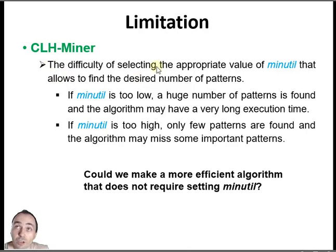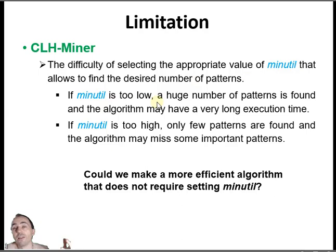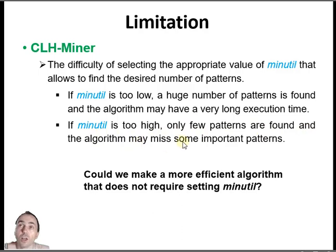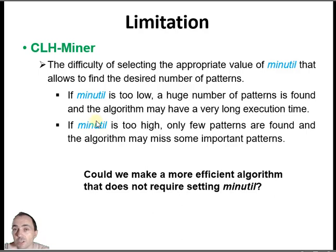CLHminer is useful, but there is still an important problem we want to solve: it is difficult to set the minimum utility threshold properly. If you set it too low, you will find so many patterns and it will take a lot of time. Maybe you will find millions of patterns and the user won't have time to look at all of them. If you set the minimum utility too high, only a few patterns are found and the algorithm may miss many important patterns. So in this paper, we want to replace the minimum utility — we don't want to use this parameter because it is not easy to set and usually requires trial and error.